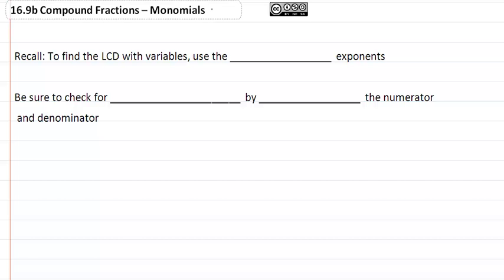16.9b Compound Fractions Monomials. Recall to find the LCD with variables we use the highest exponents. Be sure to check for common factors by factoring the numerator and denominator after simplifying.